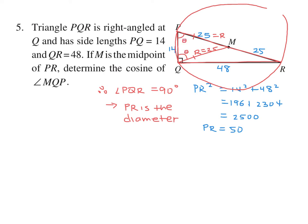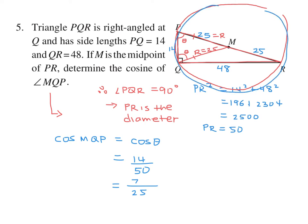In isosceles triangles, the base angles are equal, so now we can proceed. We want the cosine of angle MQP, which we call theta. Using the right triangle PQR instead — since angle MQP equals angle QPR — the cosine of theta is adjacent over hypotenuse, which is 14 over 50. Simplifying, that's 7 over 25. As you can see, that one step of putting the circle around the triangle really helps in this question.